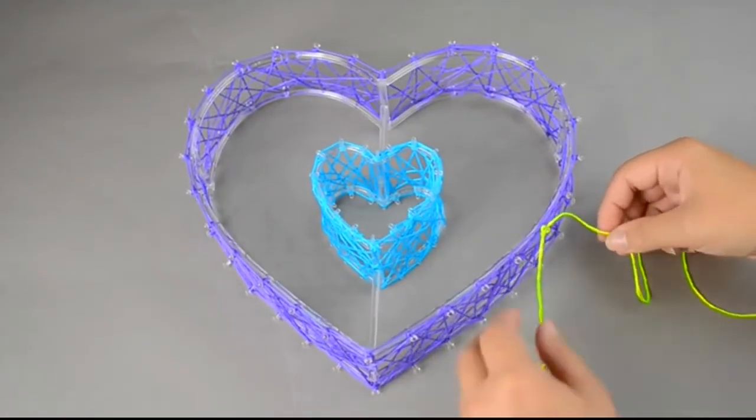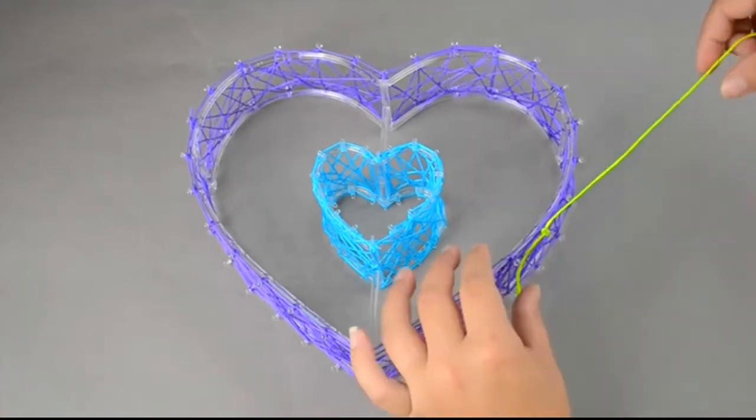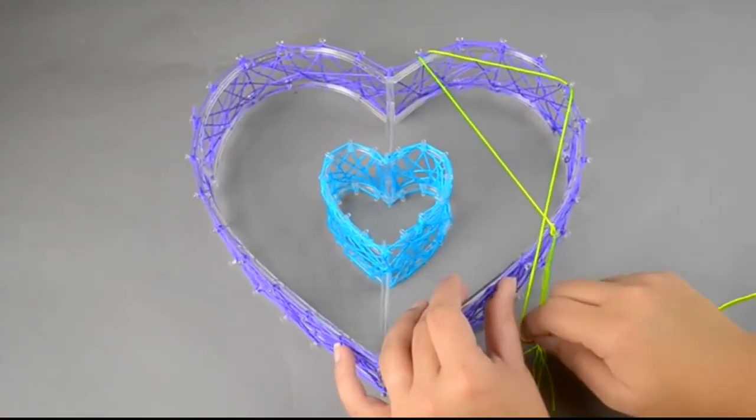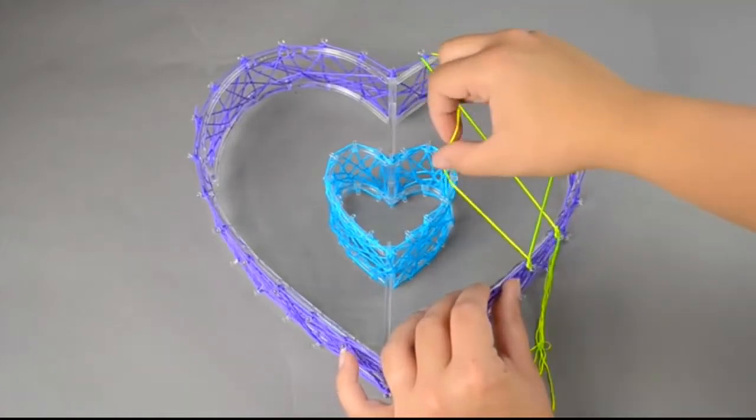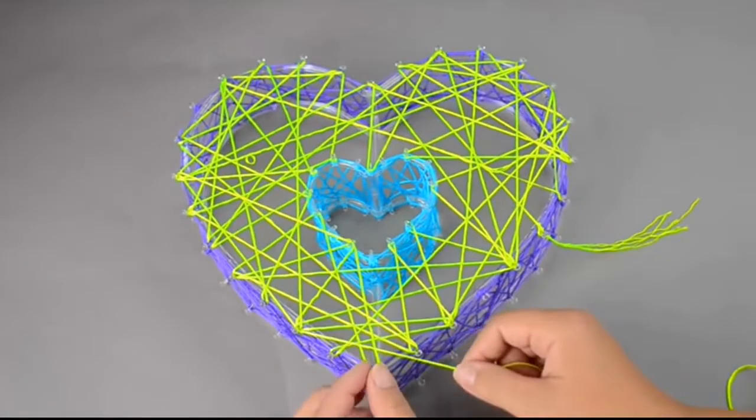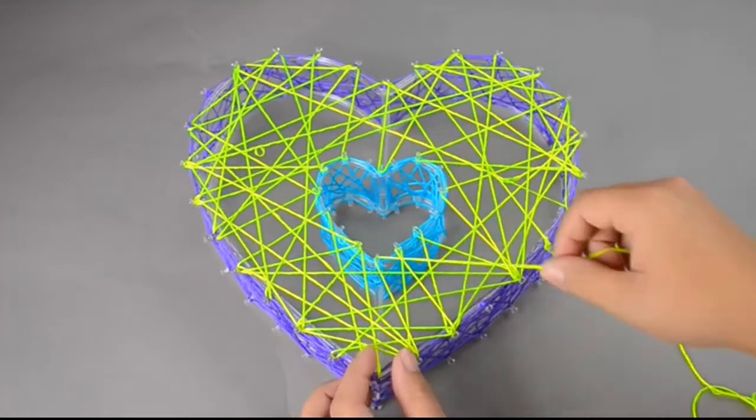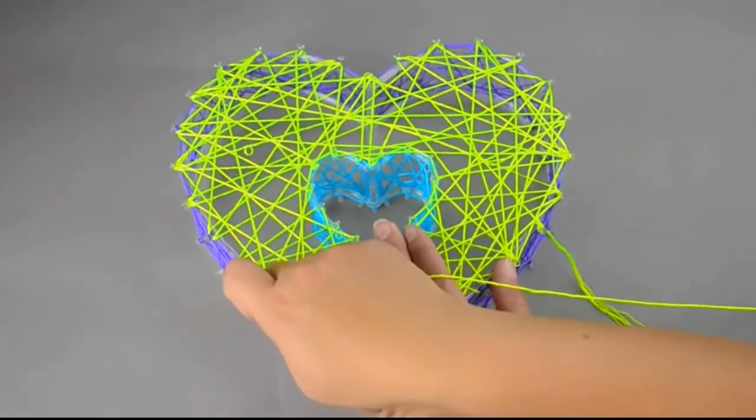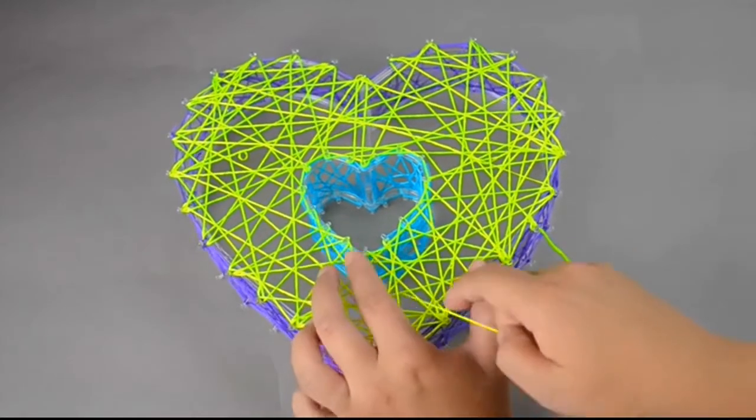Knot the yellow thread at any point on one of the large hearts. Wrap the thread from one peg to another across the front of the heart. Make sure not to cross into the small heart opening. Go around the perimeter and finish with a knot.